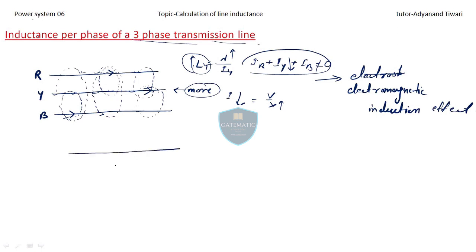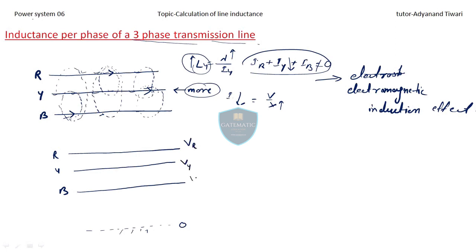Now consider three-phase R, Y, and B phases above a ground plane at zero potential. R phase has voltage VR, Y phase has voltage VY, and B phase has voltage VB. Due to the potential difference between each phase and ground, a potential gradient exists and an electric field is created for each phase.